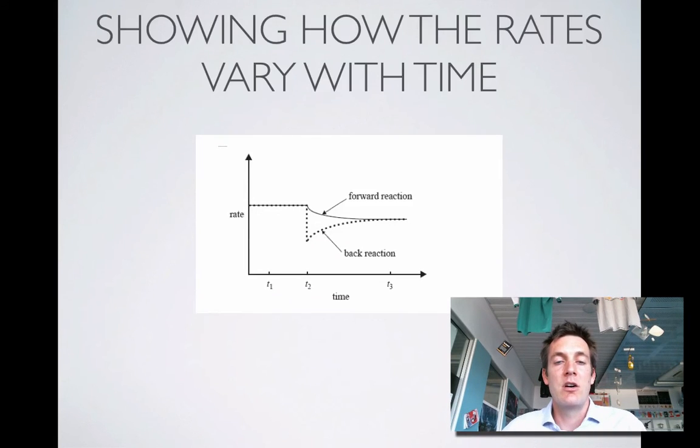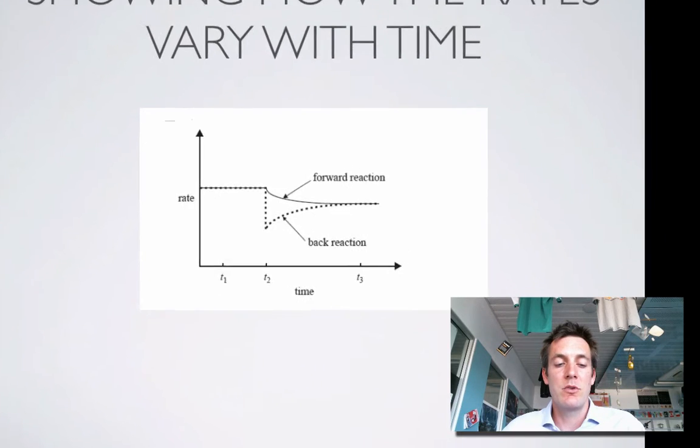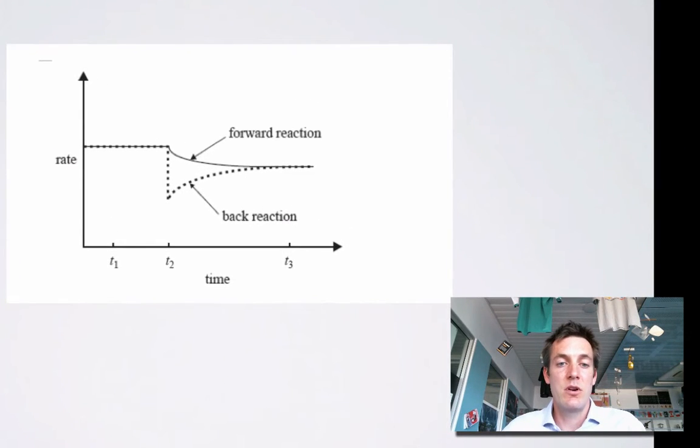So let's start off by looking at a typical rate-time graph. Why is it called a rate-time graph? Well, because it's got rate and it's got time on the axes. That's a good start. So if you've got rate and time on the axes, you know you're looking at a rate-time graph.